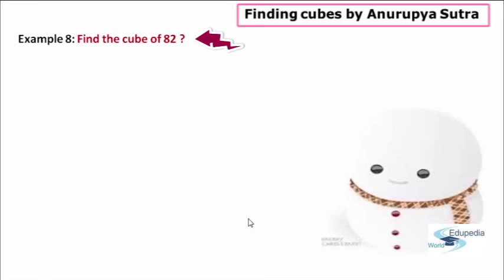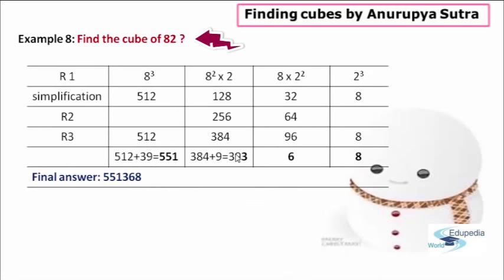In order to find the cube of 82 or any two-digit number, at first we have to make a table like this. By seeing this table, you would have got a pretty good idea about the rows and the parts of the process that we discussed in our earlier sessions on finding cubes by Anurupyana Sutra at beginner's level. Here too, we use the same concepts, but we will get our answers at a very short level.